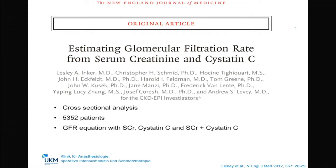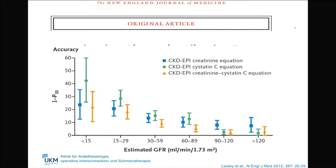The glomerular filtration rate is routinely estimated through the use of serum creatinine; however, this might be imprecise and lead to an overdiagnosis of chronic kidney disease. Cystatin-C has been shown to be a good alternative filtration marker. A cross-sectional analysis of more than 5,000 patients showed that an equation combining creatinine and cystatin-C may offer better accuracy for measuring GFR, especially below 60 mls per minute — the threshold for CKD diagnosis.